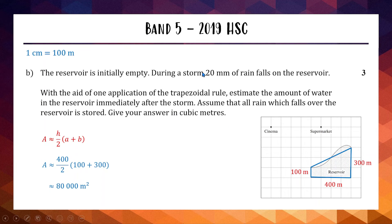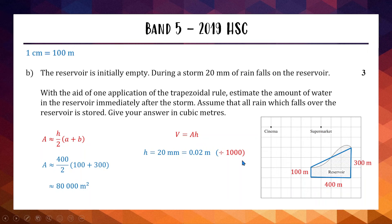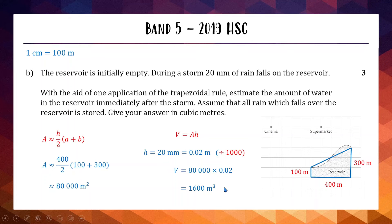Now we multiply the area by the height of rain to get volume. The issue is our area is in square meters and the rain is in millimeters — we need the same units. Converting 20 mm to meters: divide by 1000, giving 0.02 meters. Volume equals area times height: 80,000 times 0.02 equals 1,600 cubic meters. The question asks for cubic meters, so our answer is 1,600 cubic meters for three marks.